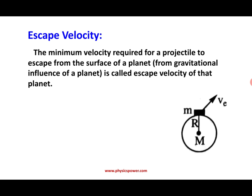To get the expression for escape velocity, consider capital M as the mass of the planet — or in general, the Earth — and R as the radius of the Earth or planet. On the Earth's surface there is a mass m. We project that massive body with a velocity VE, and it should not come back. On the surface of the Earth, whatever potential energy exists — if you supply that much kinetic energy, both will be balanced and the body cannot return to Earth's surface.